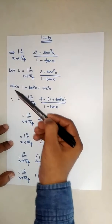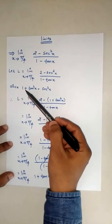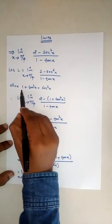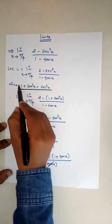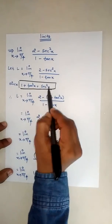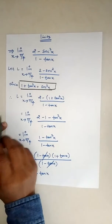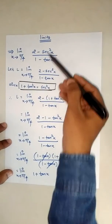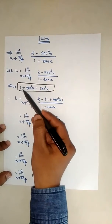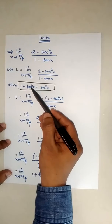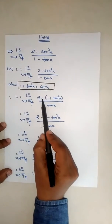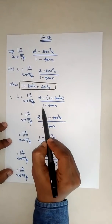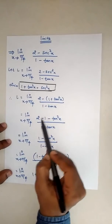We know the formula: 1 + tan²x = sec²x. So sec²x will get replaced by 1 + tan²x. Therefore the numerator becomes 2 minus (1 + tan²x), with the denominator remaining as it is.